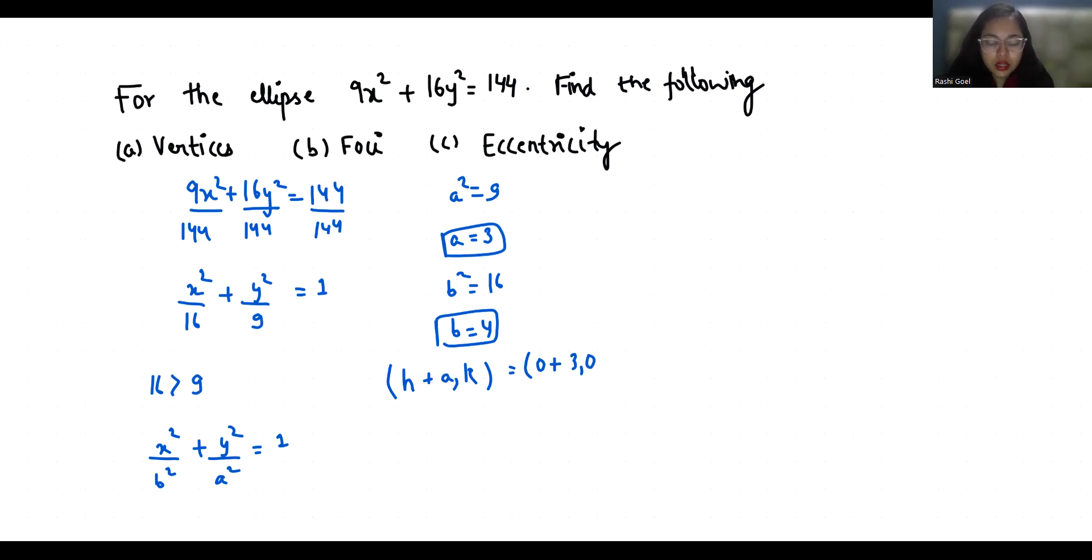And the left vertex is h - a comma k, which is 0 - 3 comma 0, so that is (-3, 0). So the vertices are (3, 0) and (-3, 0).